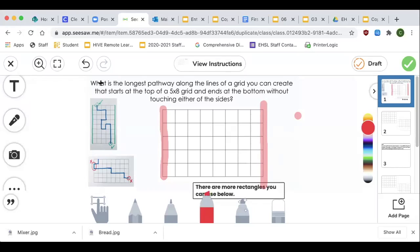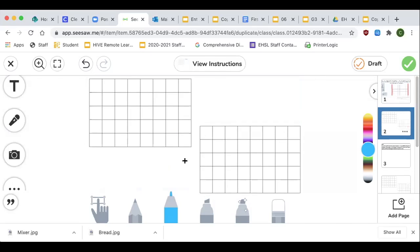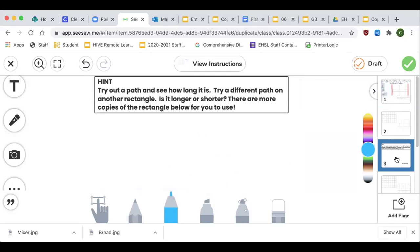And then it says, okay, what is the longest pathway? And I have to go from the top to the bottom, but I can't touch either sides. So here's a couple of examples. And if I look at this example on the bottom, do you see how it touched the sides? So that one doesn't work. I want to see what you can create. So this is just one example of a five by eight grid. You actually have a couple more in your Seesaw to try out different ways. I want you to try out multiple ways to see how you did it. Then I want you to try and make the longest path.